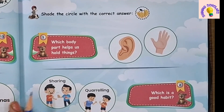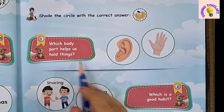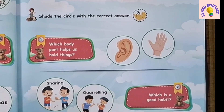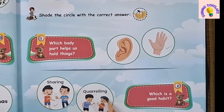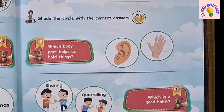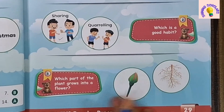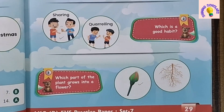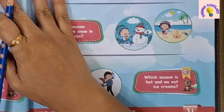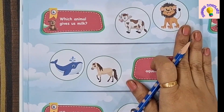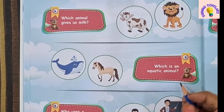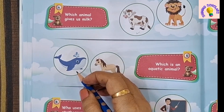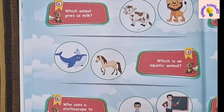Set 7. Which body part helps us hold things? And which is a good habit? Sharing things is a good habit, whereas quarrelling and fighting with others is a bad habit. Which part of the plant grows into a flower? Bud. Which animal gives us milk? Cow gives us milk. Which is an aquatic animal? Dolphin is an aquatic animal.